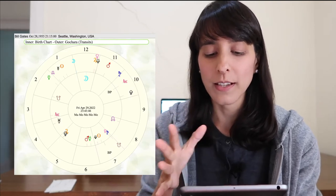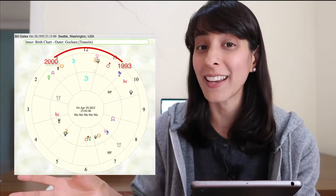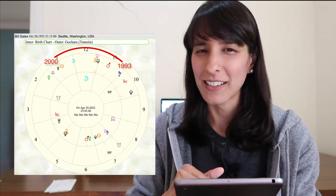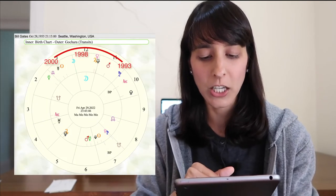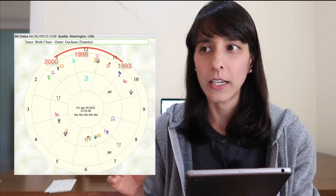Last time Bill Gates was in Sade Sati, he was in court over anti-trust allegations regarding Internet Explorer, focusing on an abuse of monopolistic power. The Federal Trade Commission began its investigation in 1992. His Sade Sati started in 1993 and ended in 2000, and the court case ran over that entire period, ending in June 2000. The suit officially began in May 1998, but the investigation had been going on behind the scenes since 1992.